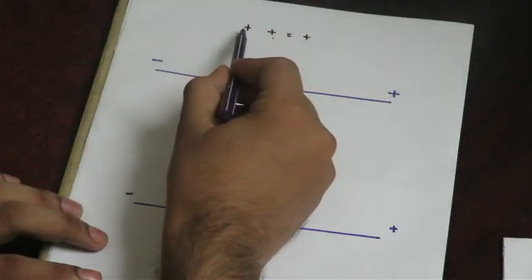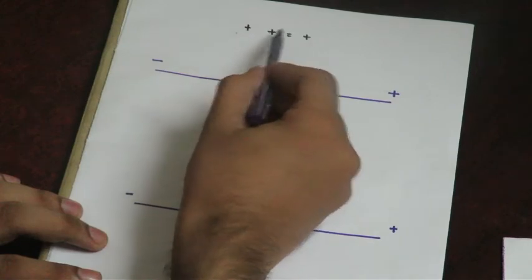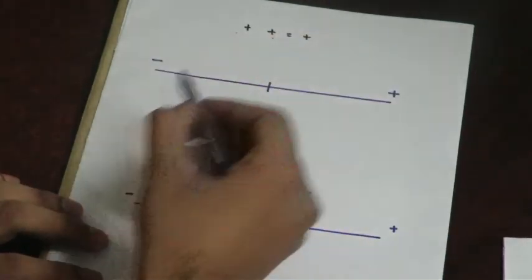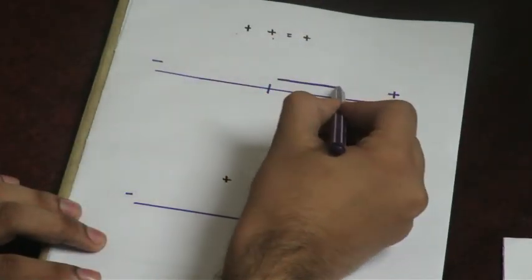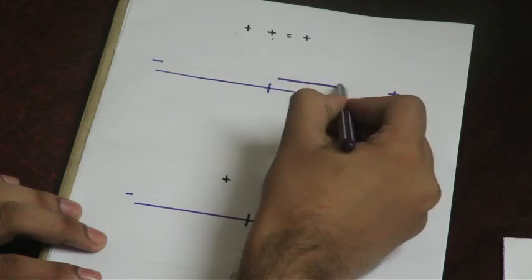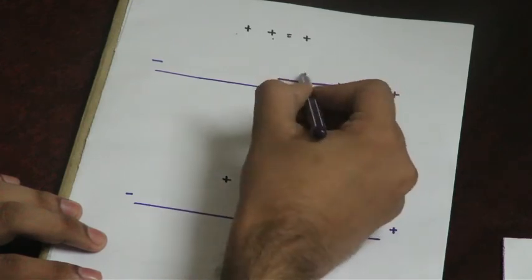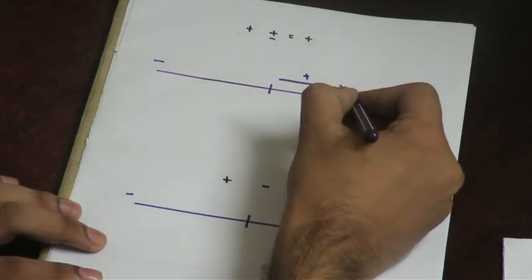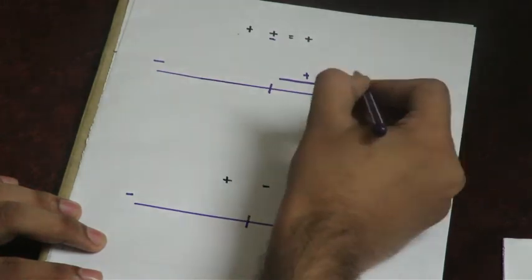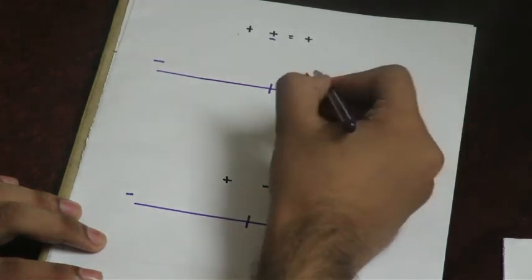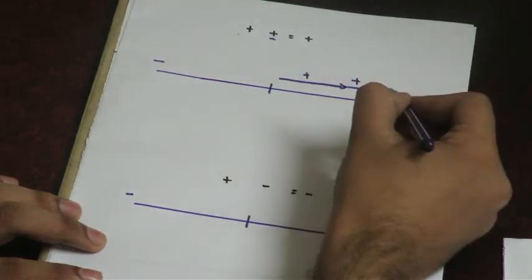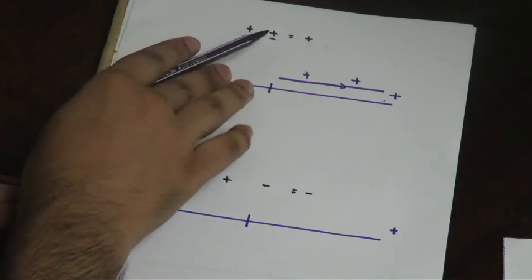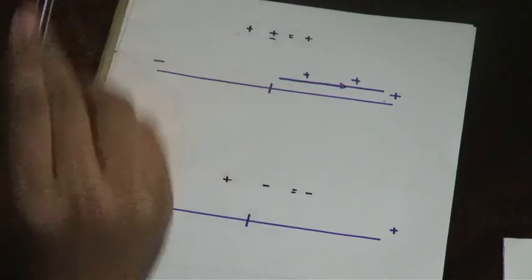The rule is plus plus equals plus. What is the result? This is the result. And this is the plus. The plus is the result. Ultimately, the plus is the result. There is a plus plus equal to plus.